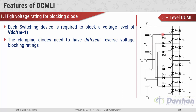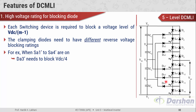The clamping diodes need to have different reverse voltage blocking ratings. For example, when SA1' through SA4' are on, the clamping diode DA3' needs to block VDC/4. This is because its anode terminal gets connected to node V1 and its cathode is connected to V2, so DA3' appears in parallel with capacitor C4, and the voltage drop across C4 is VDC/4. Therefore, DA3' must block a voltage of VDC/4.